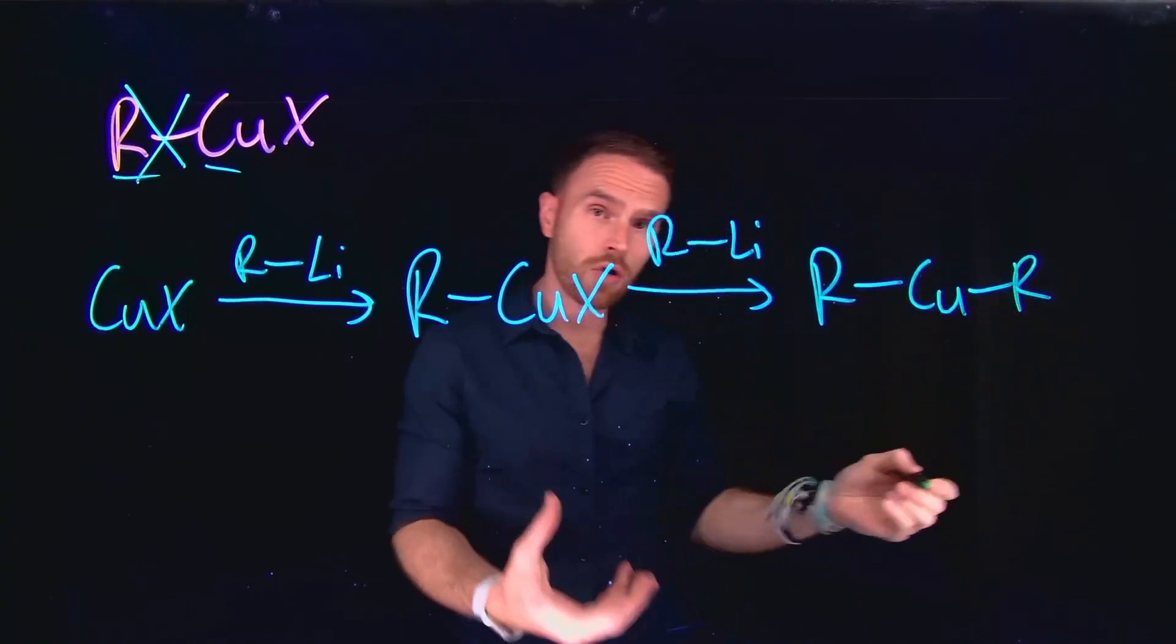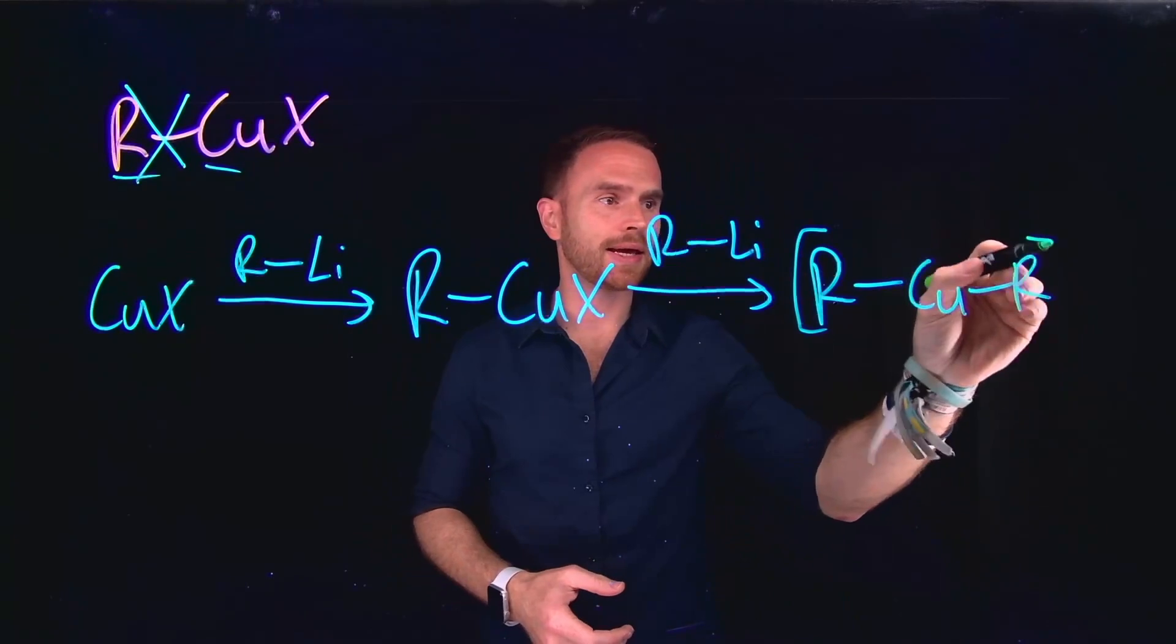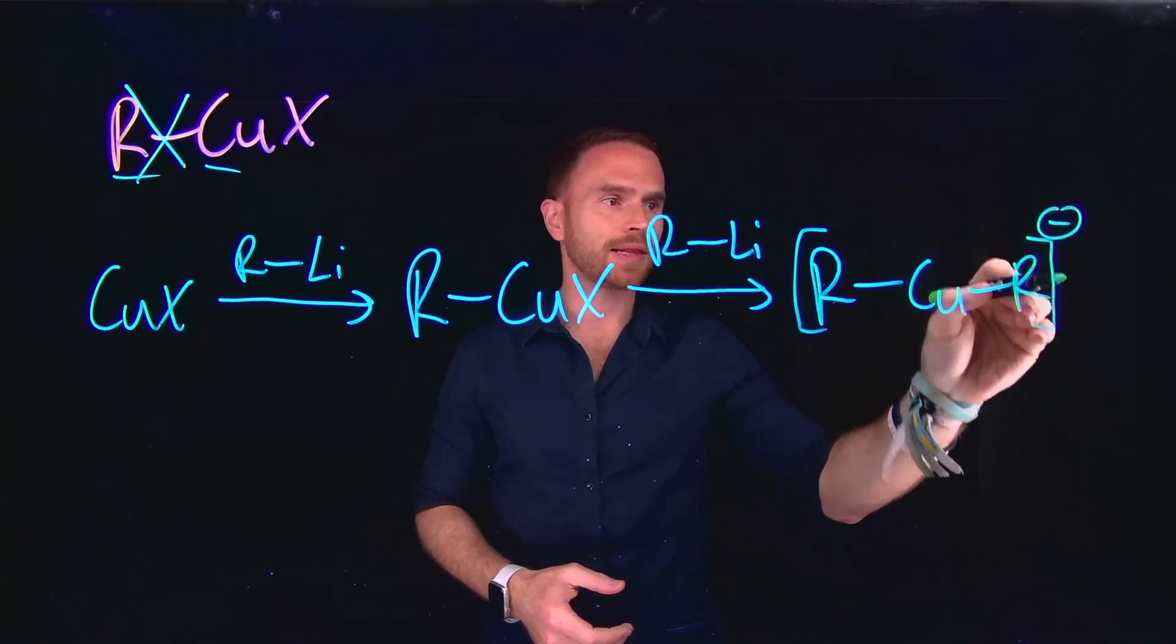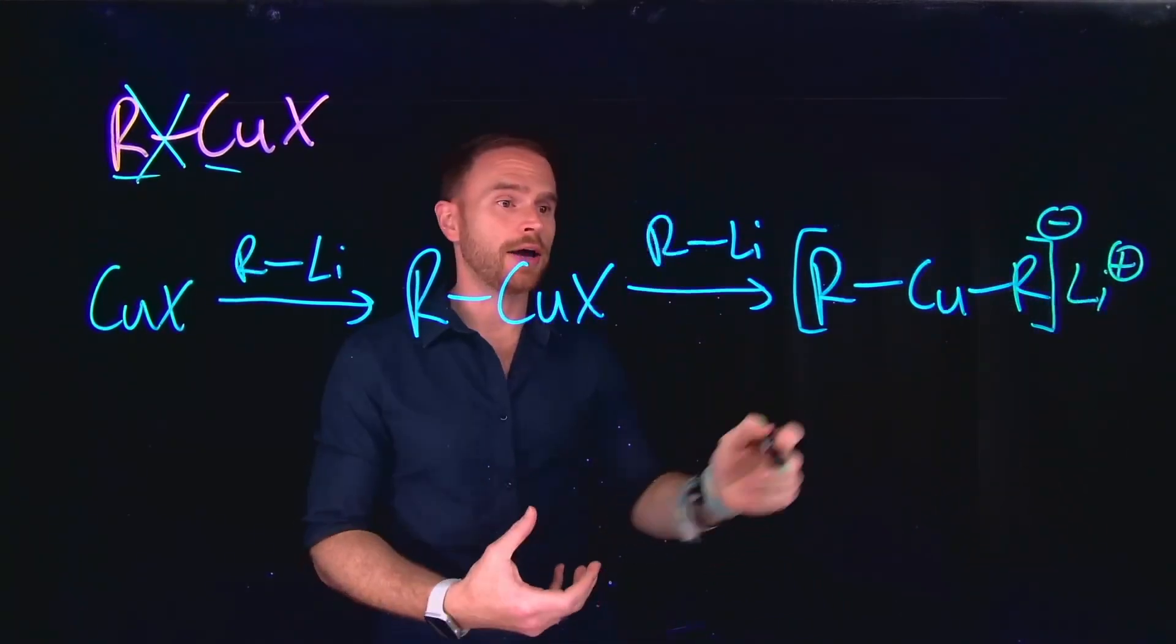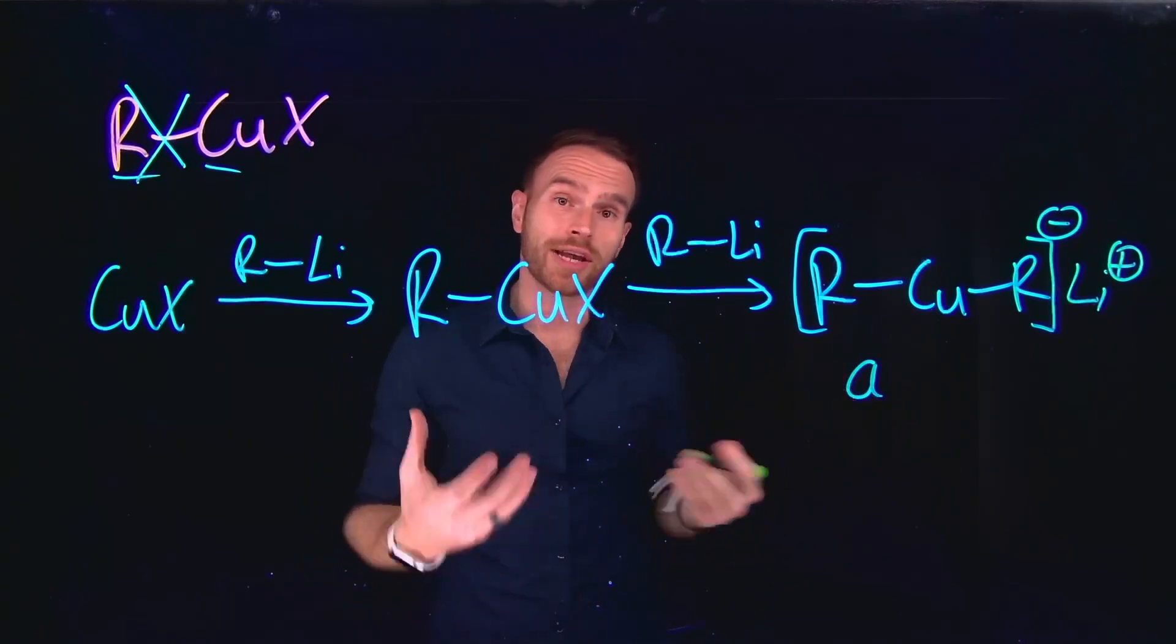So this places two R groups on the copper, making it negatively charged, and leaving behind the lithium as the counter ion. And again, this is called an organo-cuprate.